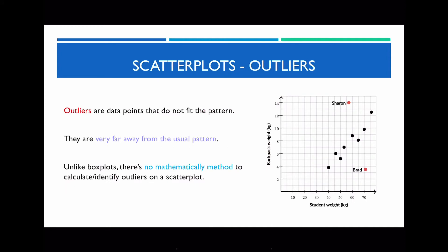I also want to talk about what outliers are. Outliers are data points that don't generally fit the usual pattern within the data set itself, and they are often very distant. These two values are considered to be outliers. If I draw the line of best fit, I don't try to accommodate for the outliers because they don't usually fit the general trend of the data set. Unlike box plots, there's no mathematical method to identify what the outliers are — they're generally quite obvious, so you just need to eyeball them.